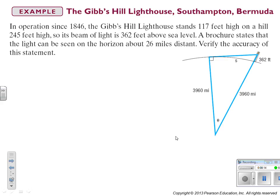In operation since 1846, the Gibbs Hill Lighthouse stands 117 feet high on a hill 240 feet high. So, its beam of light is 362 feet above sea level. So if you see, here's our Earth. Here it is, 362 feet above the Earth. Here's the center of the Earth.